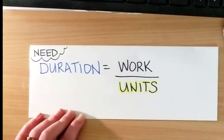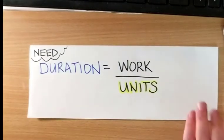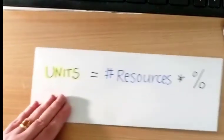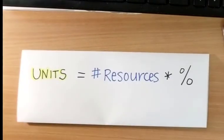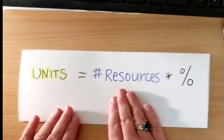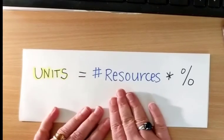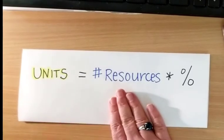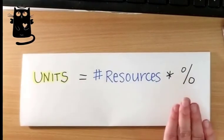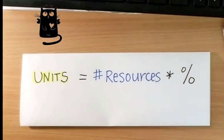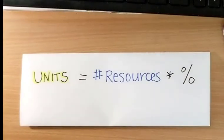But units is actually a formula as well. Units is actually the number of resources that you have allocated to that task times the percentage of their time that they are working on that task in each workday.